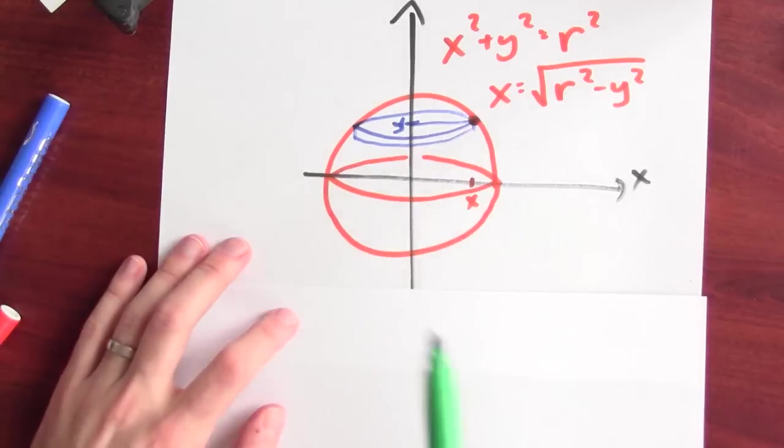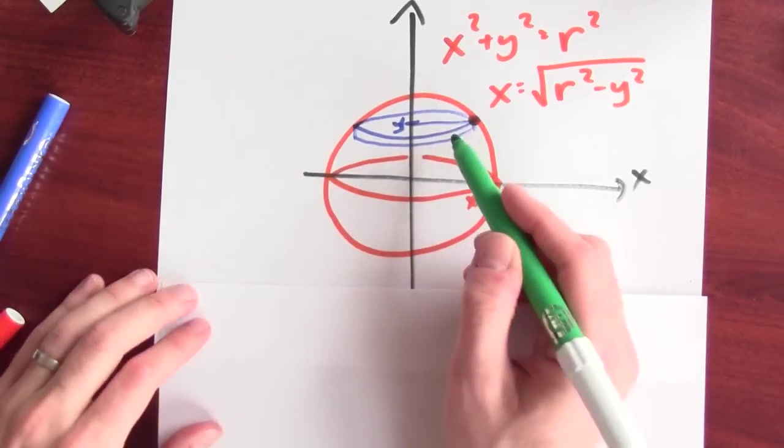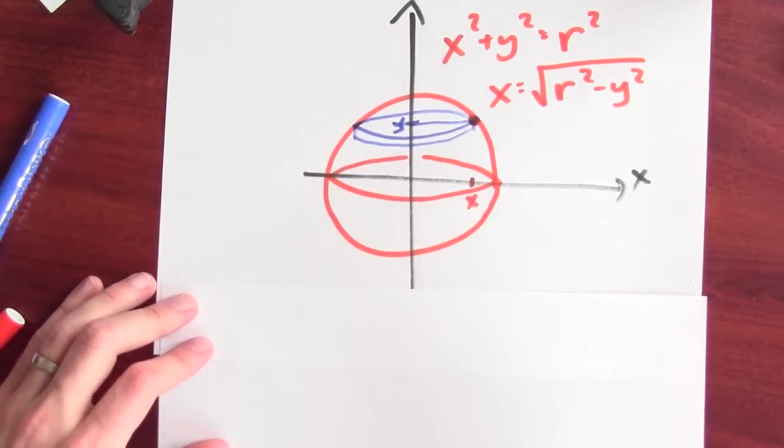Now, I'm going to figure out the volume of that thin cylinder. What's the volume of this slice? What's the volume of that thin cylinder?